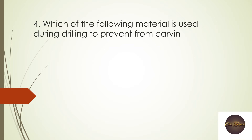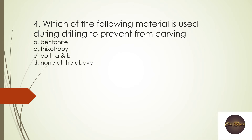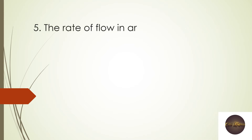Next question: Which of the following materials is used during drilling to prevent caving — bentonite, trophic, both A and B, none of the above? While drilling there is a problem of soil or stones being attached to the drilling materials. To remove that problem we use bentonite and thixotropic materials. The right answer is both A and B.